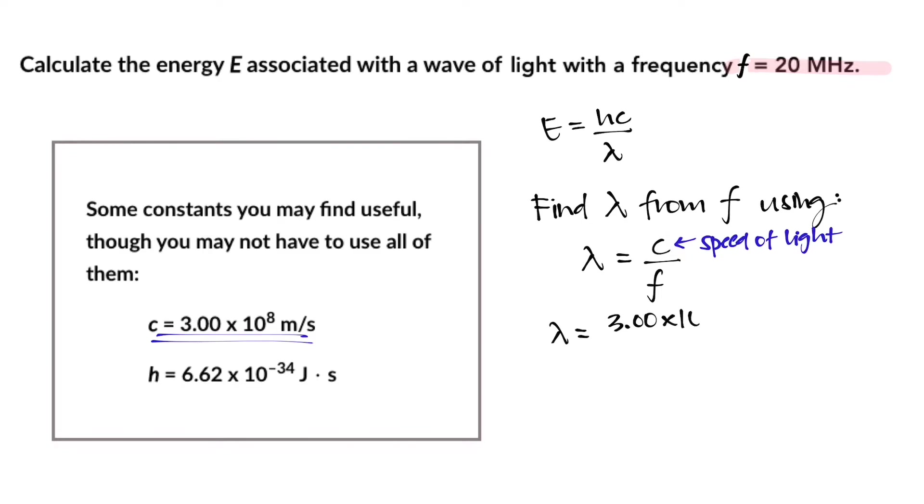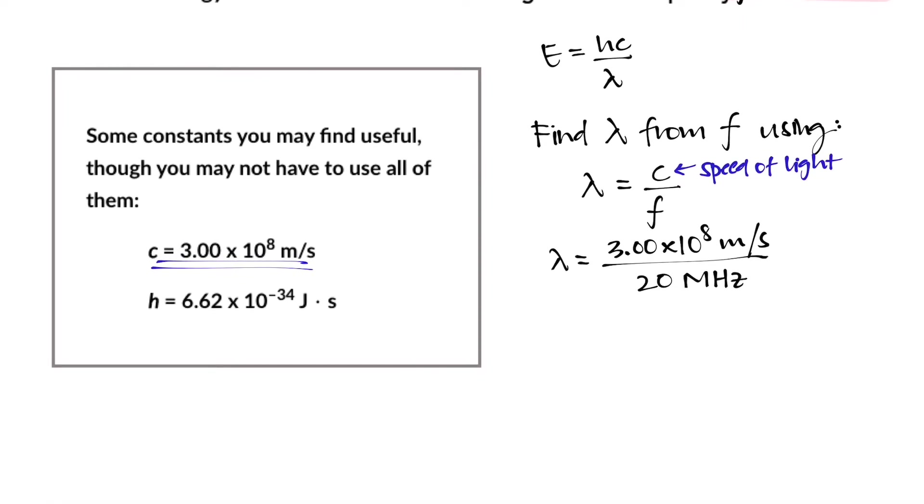So lambda equals 3.0 times 10 to the power of 8 meters per second divided by 20 megahertz. One thing to note is that megahertz is the unit that's often associated with frequency. Megahertz automatically tells us that we're dealing with the metric system. So mega means 10 to the power of 6. So what we're technically looking at is lambda equals 3.0 times 10 to the power of 8 meters per second divided by 20 times 10 to the power of 6 hertz.